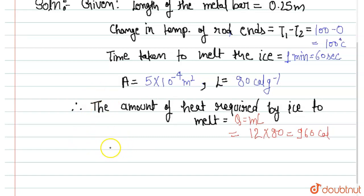Also we have a formula Q is equal to k A T1 minus T2 t upon x. So we can write here we can solve for the value of Q, we have 960 calorie.